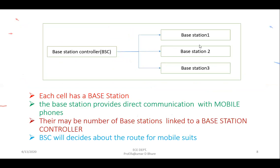Now consider there are N number of cells, each consisting of one base station — base station one, base station two, base station three, and so on. Here three cells are considered, each covered by a base station. These base stations are all controlled by a base station controller.